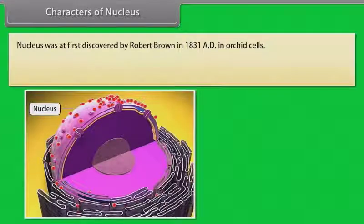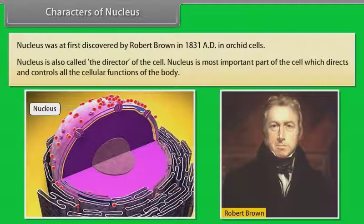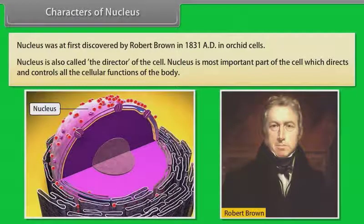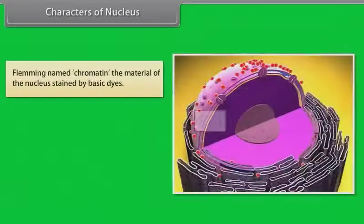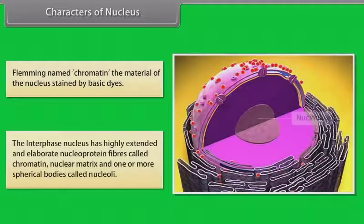Characters of nucleus. Nucleus was first discovered by Robert Brown in 1831 AD in orchid cells. Nucleus is also called the director of the cell and is the most important part, which directs and controls all the cellular functions. Fleming named chromatin the material of the nucleus stained by basic dyes.